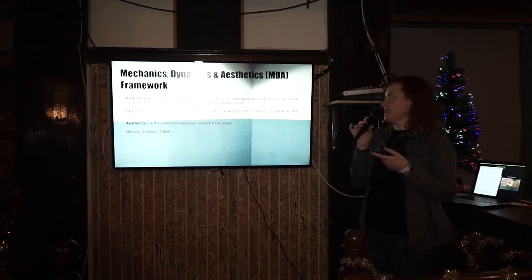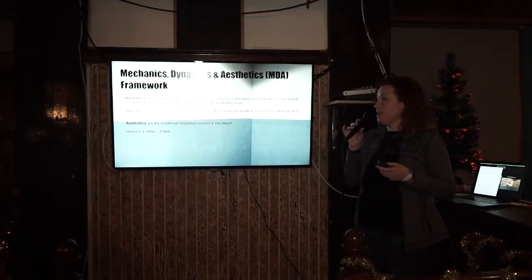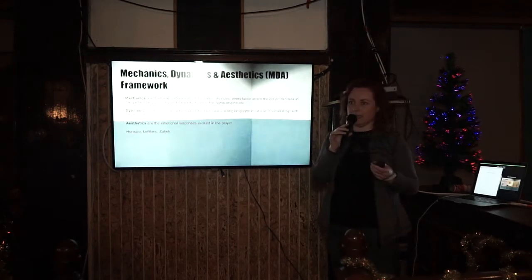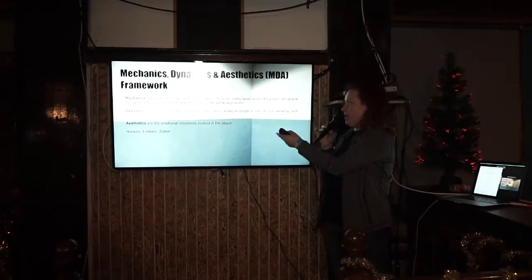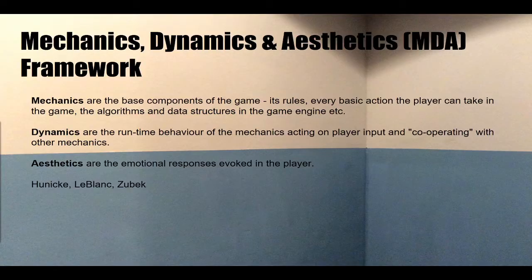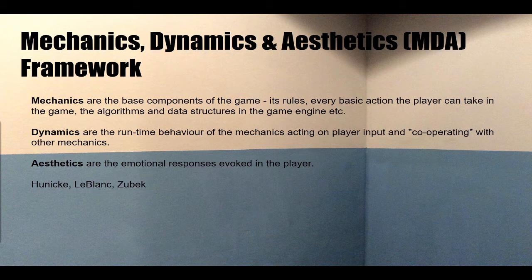Seeing that and thinking about twine games, using text to tell stories, made me think about the Mechanics, Dynamics, and Aesthetics framework — the MDA framework — a way of analyzing games, written by Hunicke, LeBlanc, and Zubek as a white paper. Mechanics are basically the cogs and gears — the things that make the game work. Dynamics is what those cogs and gears do together when you play it, how they interact and what the gameplay is. The aesthetic is where, in Braid, the story — that big block of text — was just layered on top, lying around for you to find.